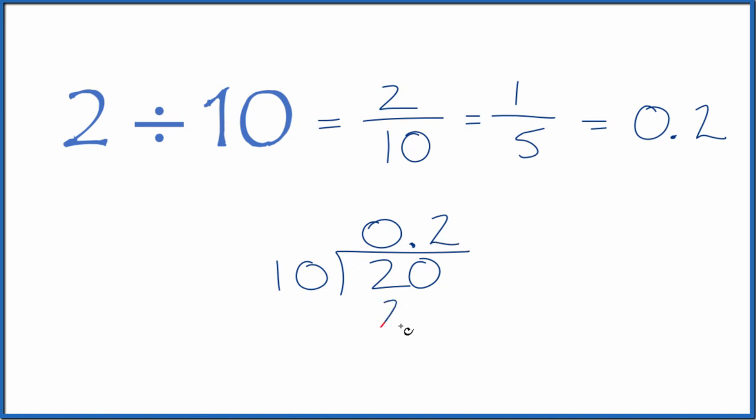Now, 2 times 10, that's 20. We subtract. No remainder. So 2 divided by 10, that gives us 0.2. That's what we found up here before.